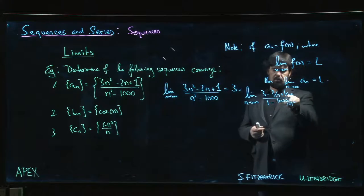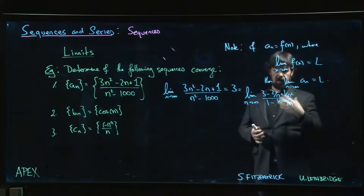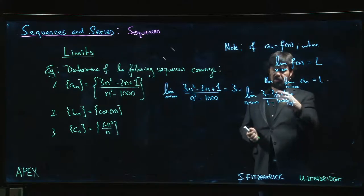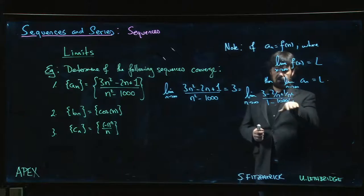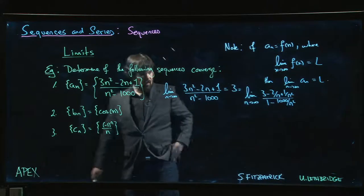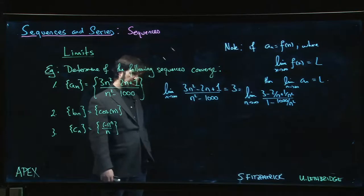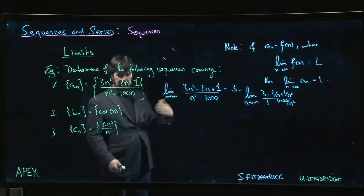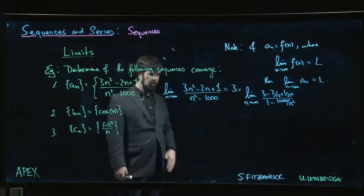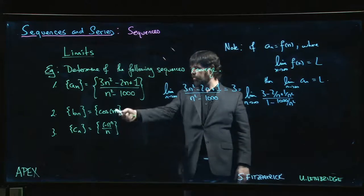You can use the limit definition, you can give an epsilon-n proof to show that the limit of any constant over n is 0, same with n², n³. Any constant over any positive power of n is going to go to 0. So we get 3 over 1 in the limit, we get 3.